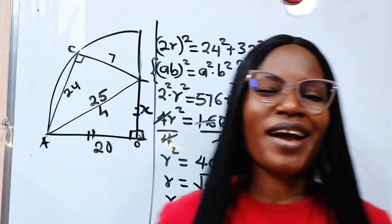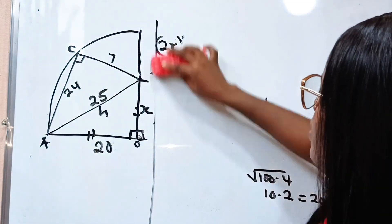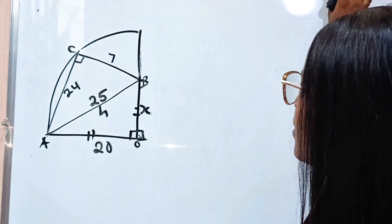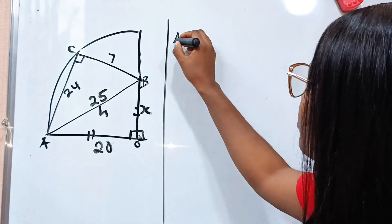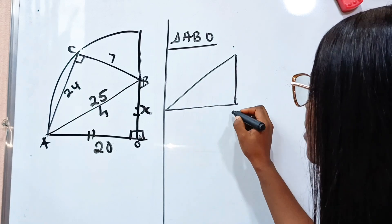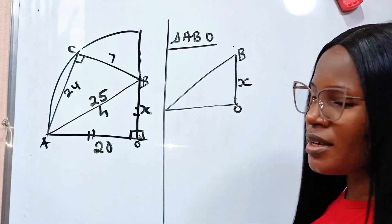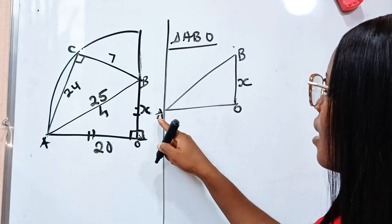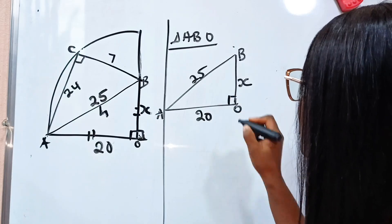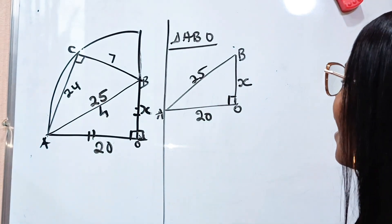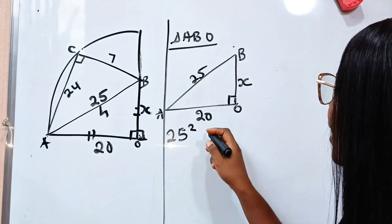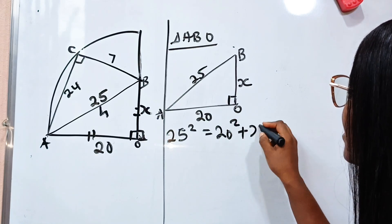Now we have come to the end of this journey. Once we have R, X is right there. Considering triangle ABO: AB is 25, AO is 20, and the angle at O is a right angle. Using the Pythagorean theorem, 25 squared equals 20 squared plus X squared.